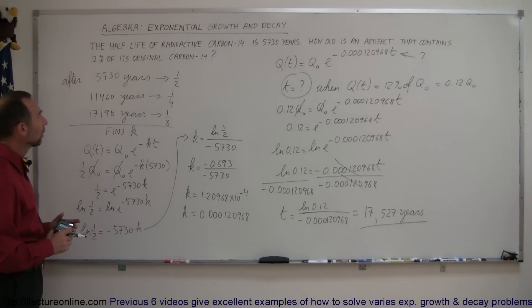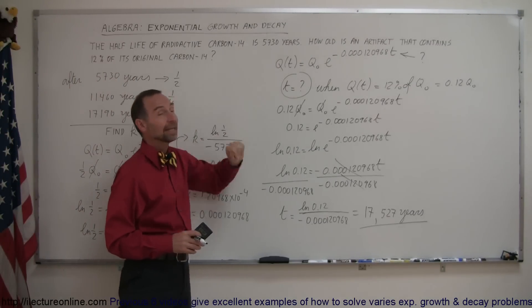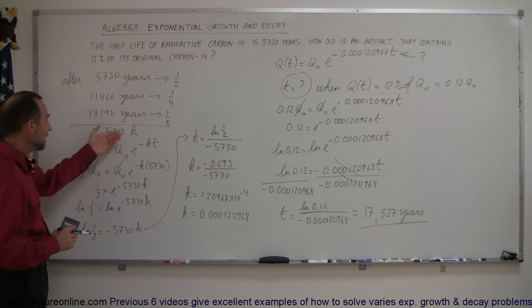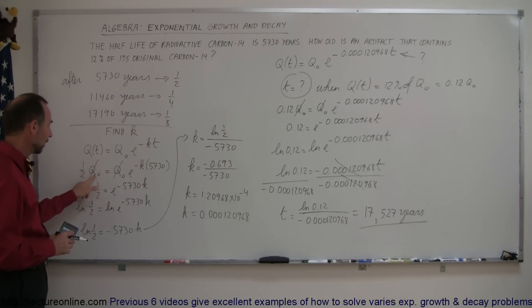So, the problem was, given that a sample had 12% of its original carbon-14 left, how old is that sample? Knowing that the half-life of carbon-14 is 5,730 years. So, we first start out by finding k, we use the equation, we plug in the half-life for t, and we then make the final amount half of the original amount. That allows us to find k.